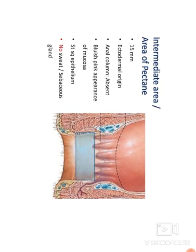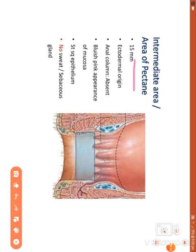Next is the intermediate area called the pecten, also 15 mm in length. The lining epithelium of the upper part is stratified columnar. The pecten itself is lined with stratified squamous non-keratinized epithelium. Deep to the mucosa there are numerous rectal venous plexuses, giving that area a bluish-pink appearance.